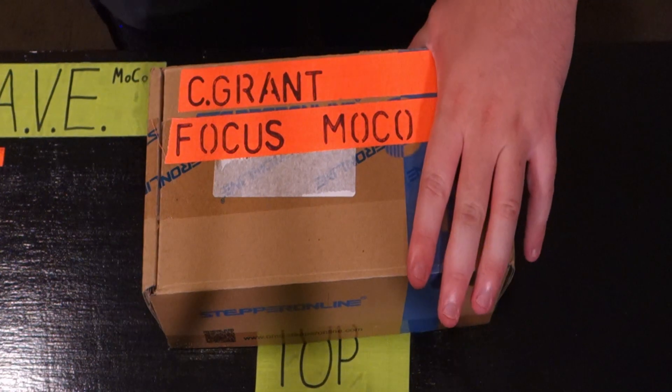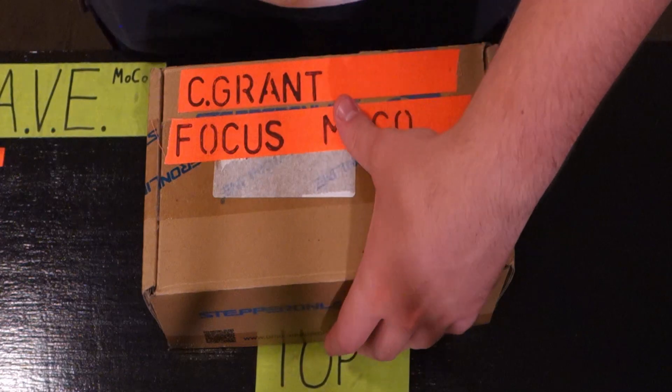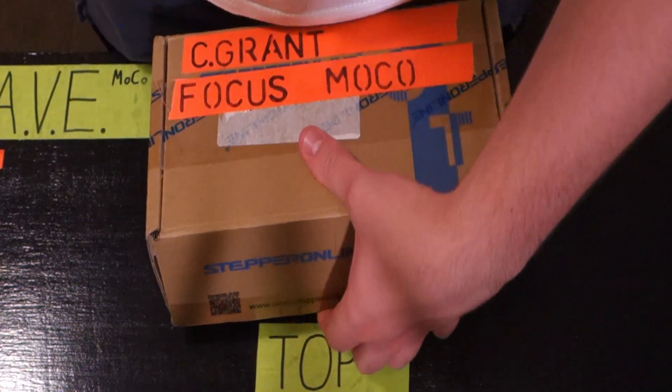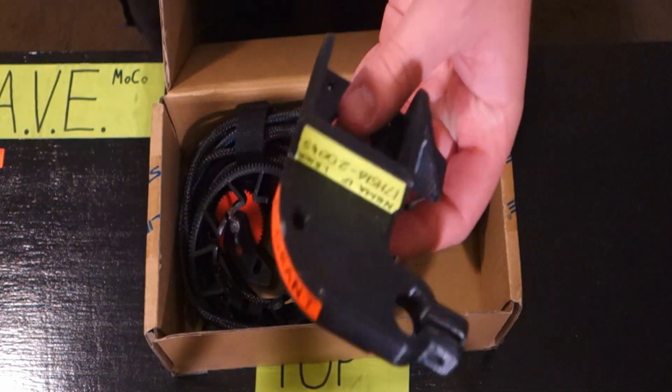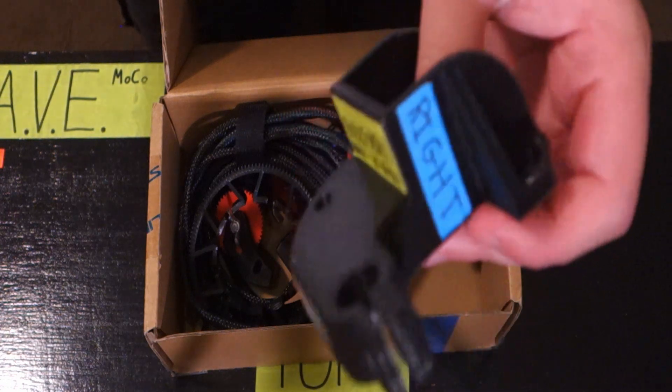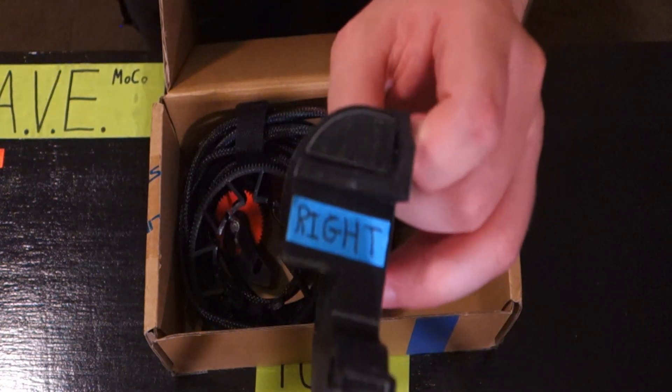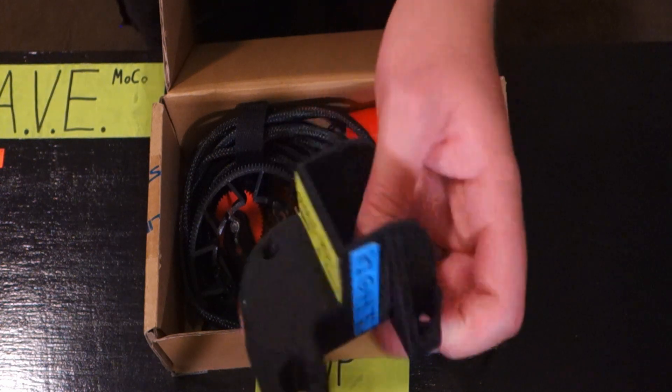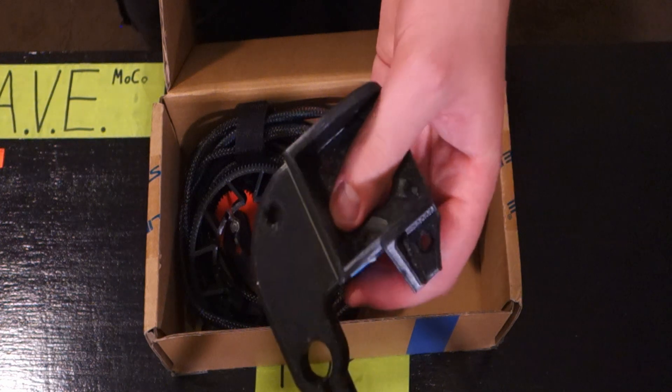Last but not least we have the focus unit. Now the focus unit is completely 3D printed with exception of a few nuts and bolts here and there. Let's have a look at it. That's just a reminder of what sort of motor is inside it. It's got some labels so I know it's mine and this is the right hand side version of that. Here we go, focus.